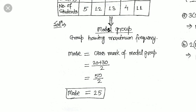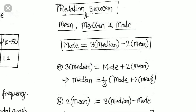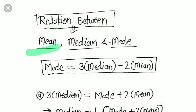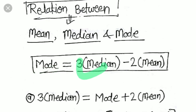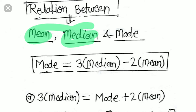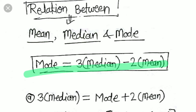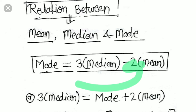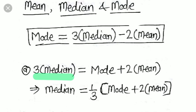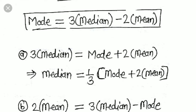Now, what is the relation between all three central tendencies — mean, median, and mode? The relation is: Mode = 3 × Median − 2 × Mean. Sometimes they rearrange this formula. For example, moving terms gives: 3 × Median = Mode + 2 × Mean, or Median = (1/3) × (Mode + 2 × Mean).